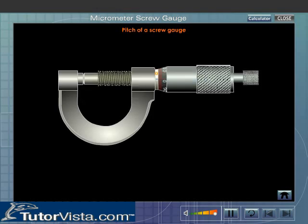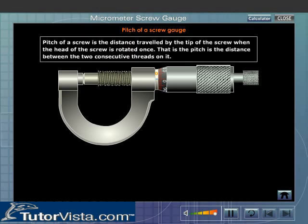Using a screw gauge. Pitch of a screw gauge. Whenever we use a micrometer screw gauge we have to first find out the pitch. The pitch of a screw is the distance travelled by the tip of the screw when the head of the screw is rotated once. That is, the pitch is the distance between the two consecutive threads on it.